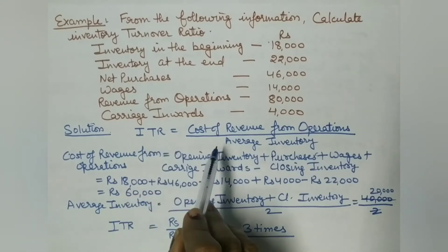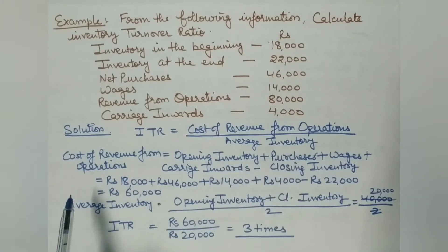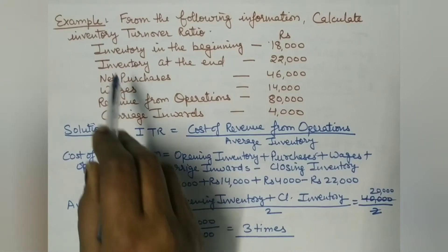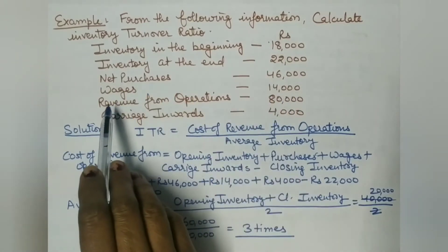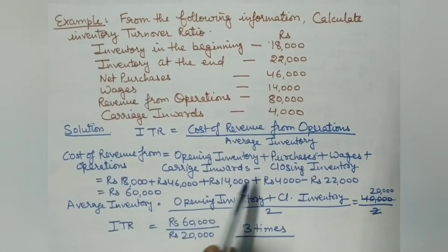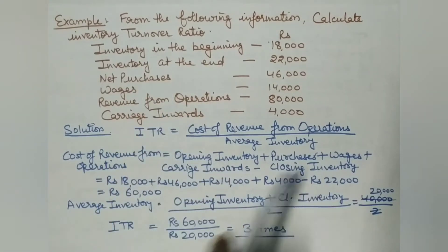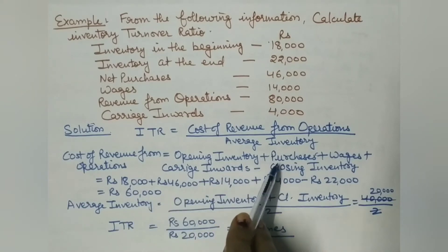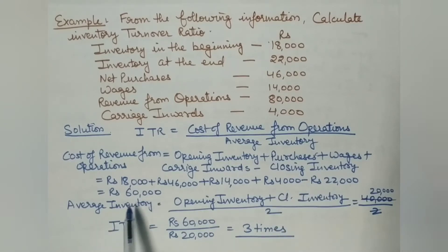Inventory turnover ratio = cost of revenue from operations divided by average inventory. Cost of goods sold = opening stock (₹18,000) + purchases (₹46,000) + wages (₹14,000) + carriage inward (₹4,000) − closing stock (₹22,000) = ₹60,000. So our cost of revenue from operations is ₹60,000.